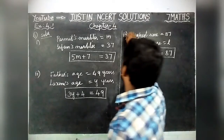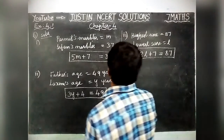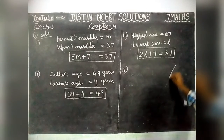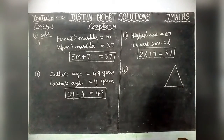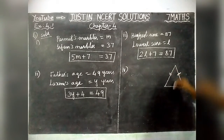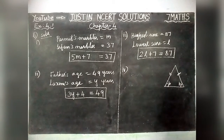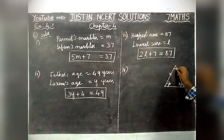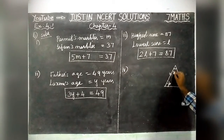4th question. In an isosceles triangle, these two sides are equal and the base angles will be equal. The base angle is equal to B. The vertex angle is two times of the base angles, so vertex angle is 2B.